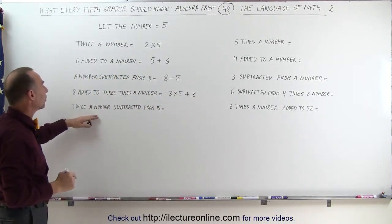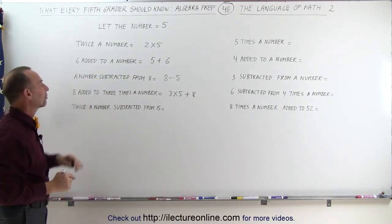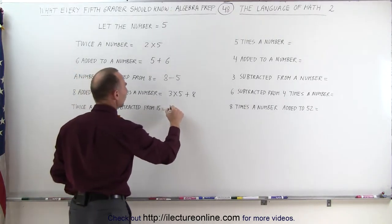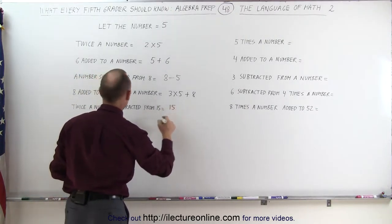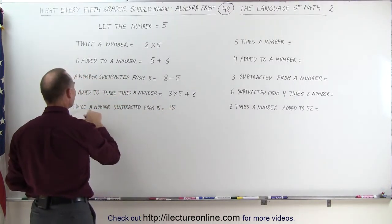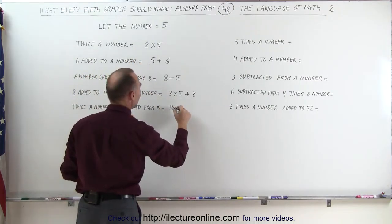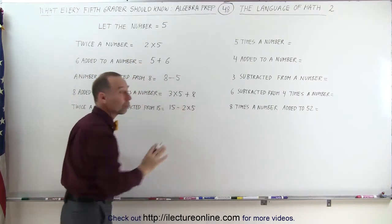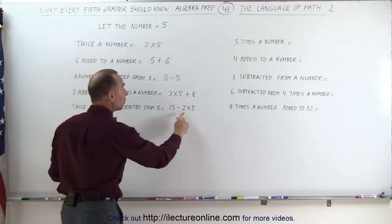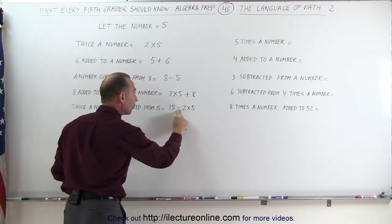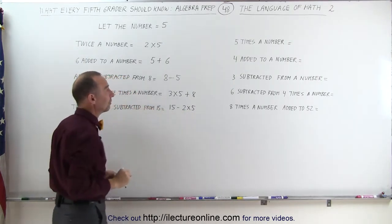Twice the number subtracted from 15. We write the number 15 first, and then we subtract from that twice the number — twice 5 — so minus 2 times 5. Remember the order of operations: we go 2 times 5 first before we subtract it from 15.